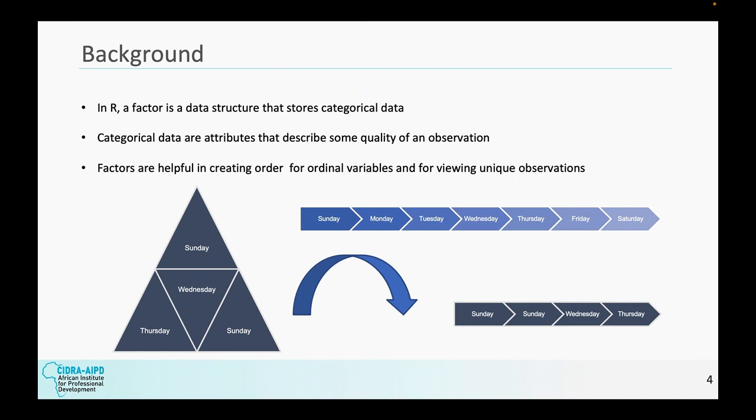So background. R factors are a data structure that stores categorical data. As you can see in the bottom left, this isn't exactly a data structure, it's just a triangle. There's no order to this data structure. Let's say this is a vector. There's absolutely no order to what is going on here. We want to transform it to this vector. In order to do so, we need something similar to a dictionary, which in this case is a factor with levels.